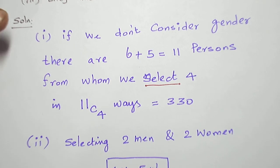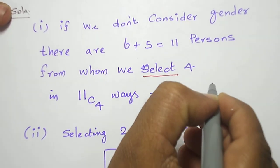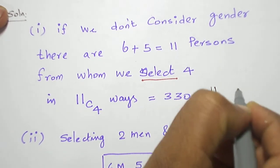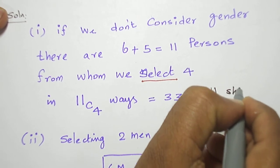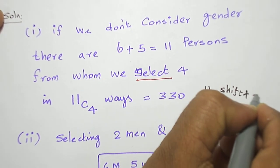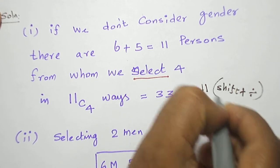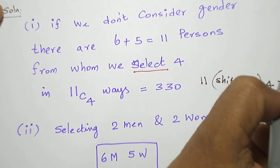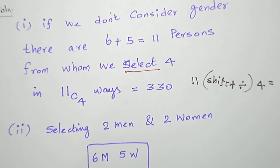How to calculate 11C4 in calculator: eleven, shift plus division, press it, and four, press equal, you will get the answer 330.